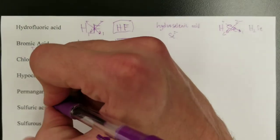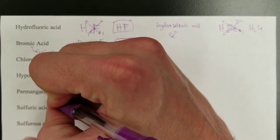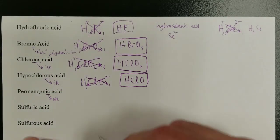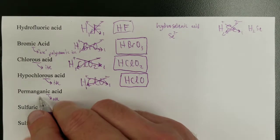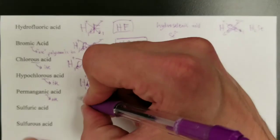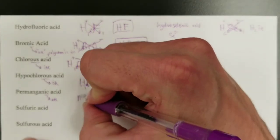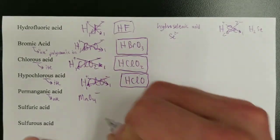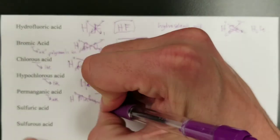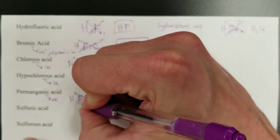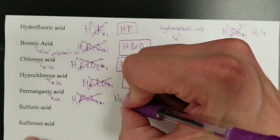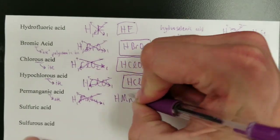Permanganic acid: '-ic' means the polyatomic ion ends in '-ate,' so we have permanganate. There's no 'hydro,' confirming oxygen is present. Permanganate is MnO₄ with a 1-minus charge. Since it's an acid it starts with H — both are 1, so one of each gives the formula HMnO₄.